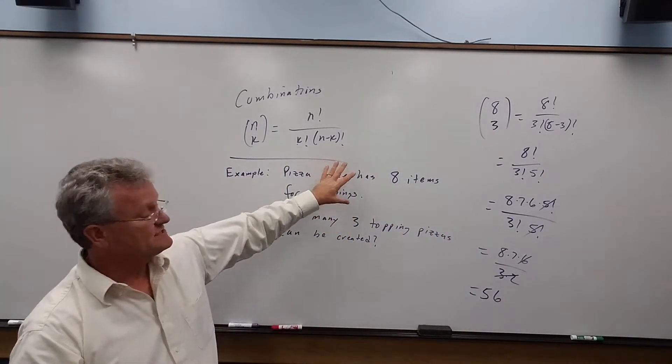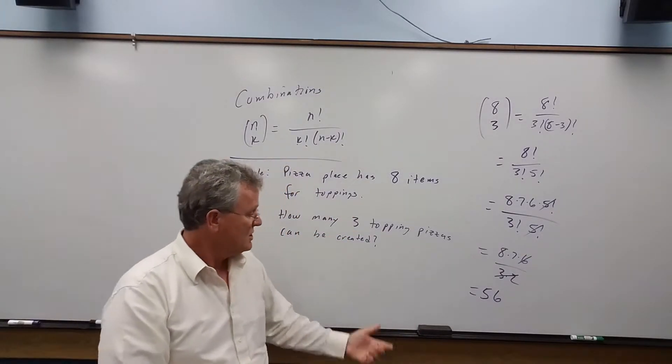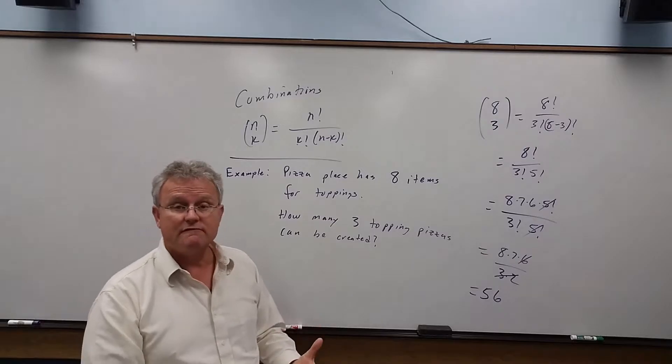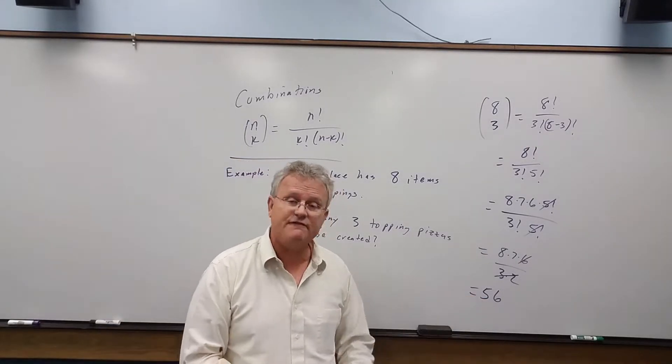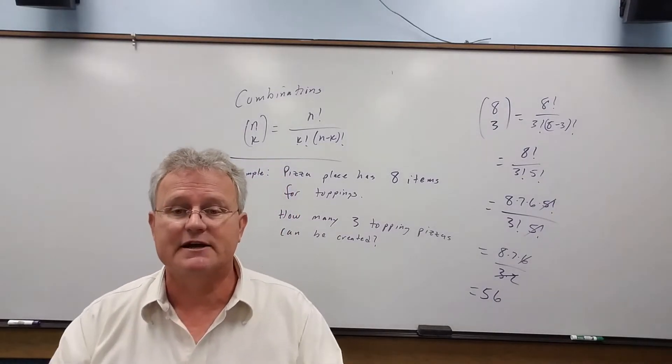So if a pizza place has a total of eight items to choose from to put on your pizza, there's a total of 56 types of pizzas that have three toppings on them.